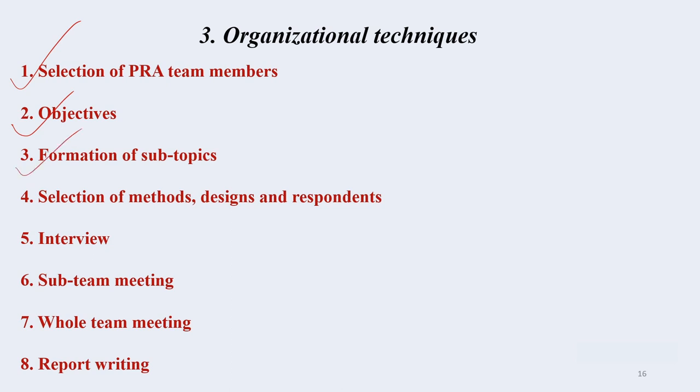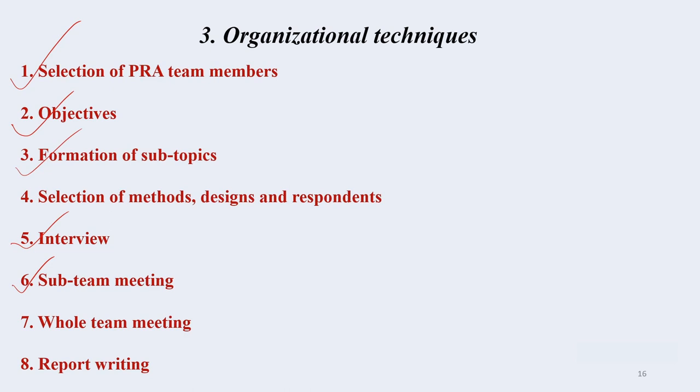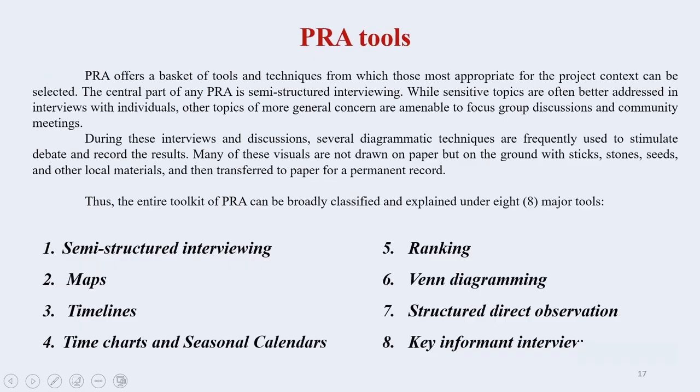What are the different sub-topics you would like to address going into the village? Interviews — how many, when, with whom, how — are things you need to take care of. Sub-team meetings are very important. Suppose you have 10 members in a PRA team: it is beneficial to divide them into groups of 2 to 3 members, each looking at a particular aspect. Then in a breakup meeting you sit separately, discuss, deliberate, and come back and join again — that is actually fruitful. After sub-team meetings, the whole team meets together and then progresses toward the report writing exercise.